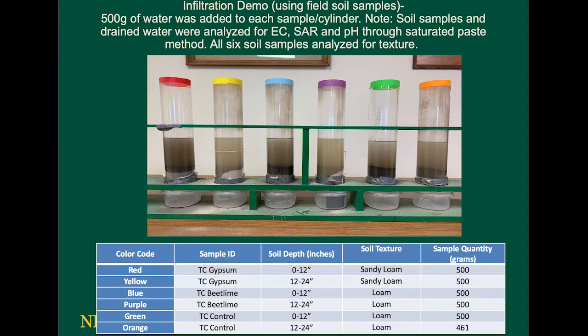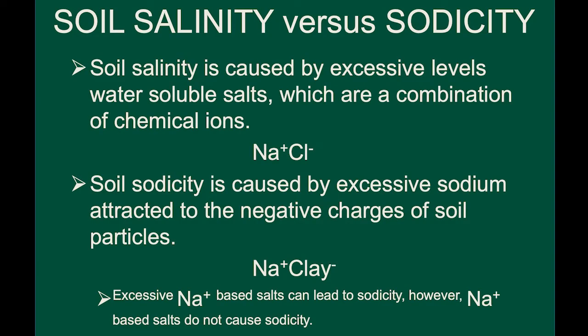In order to see if more rain could have helped, a soil water infiltration demonstration was performed on the actual soil samples of the gypsum, beet lime, and control plots for 0 to 12 inch and 12 to 24 inch soil depths. In this demonstration, soil electrical conductivity, or EC, was used to measure salinity, whereas sodium adsorption ratio was used to assess sodicity.